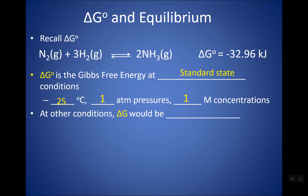As a heads up, at other conditions delta G would be different. So if you change the temperature, change the pressure, or change the concentrations you're using, you're actually going to get a different delta G. There's a whole equation you can use to calculate what that delta G is, but it's not really on the AP exam, so we're not going to worry about it.